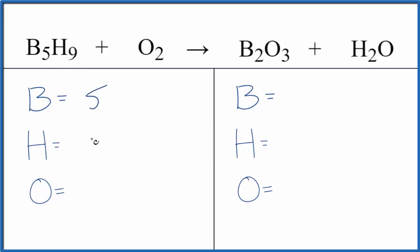Five boron atoms, nine hydrogens, two oxygens. Product side, two borons, and then let's look at our hydrogens. We have two of those. Oxygen, we have three here. Don't forget this one in water. So three plus one, that gives us four. So be careful counting your oxygens.